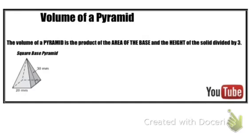To find the volume of a pyramid, we have to take the area of the base, multiply it by the height of the figure, and then divide it by 3.